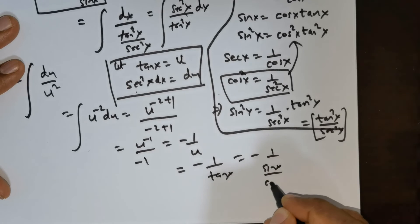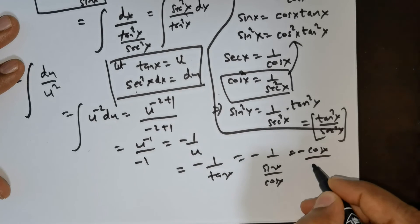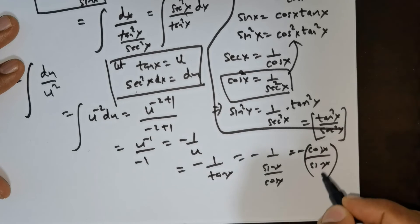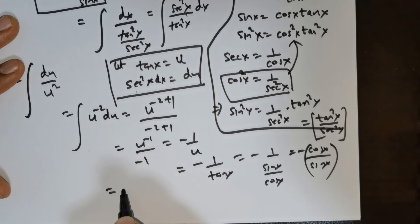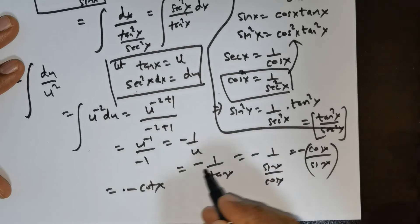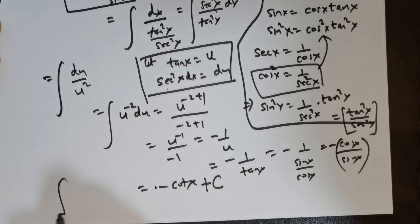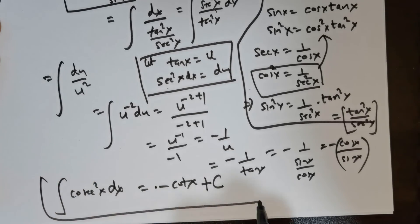But what is tan x? tan x is sine x over cos x. You flip it, you get negative cos x divided by sine x. But what is cos x over sine x? Cot x. And since it's an indefinite integral, you have an arbitrary constant C. So the left side is integral cosecant squared x dx. This is a lovely result.